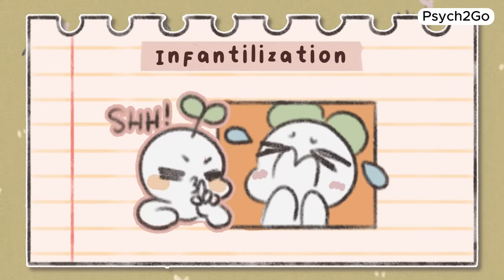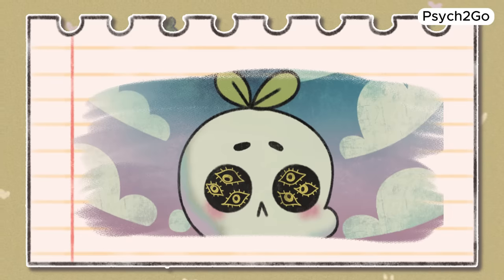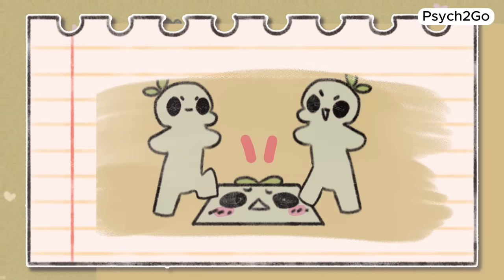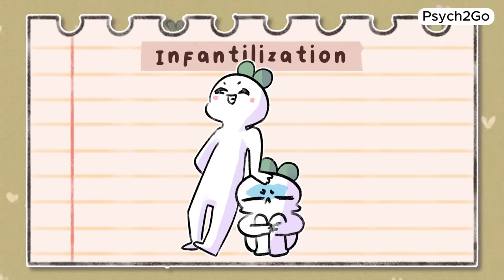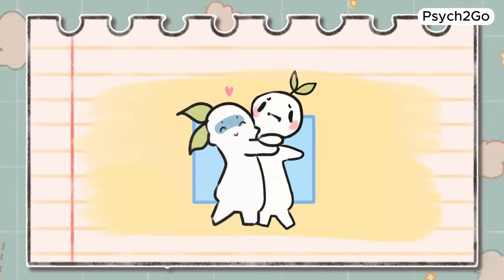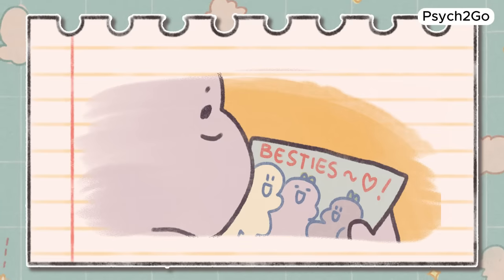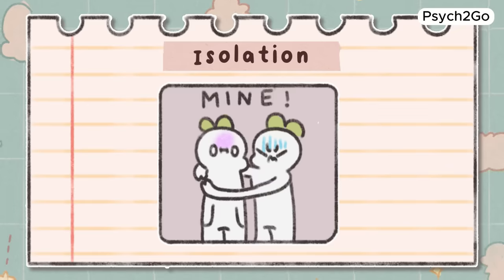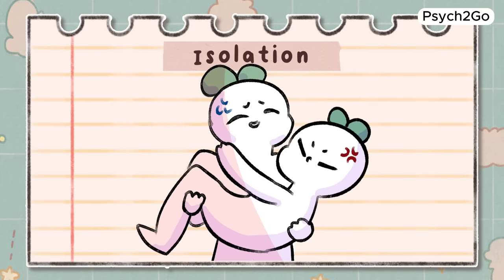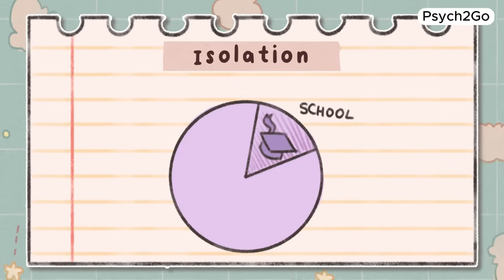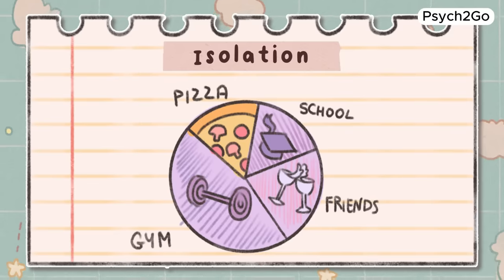Infantilization. This is when someone speaks to you as though you're a child or mentally impaired to make it known that you are not well-respected or not on the manipulator's intellectual level. Isolation. In relationships, a manipulative partner may see your family and friends as threats, so they will try to manipulate you into separating yourself from them. From there, you become entirely reliant on your partner and they can slowly control every aspect of your life.